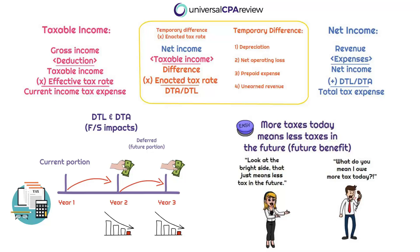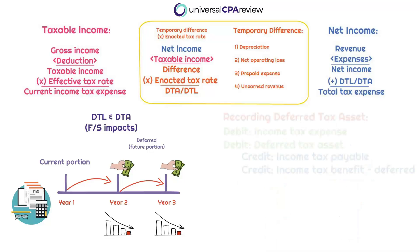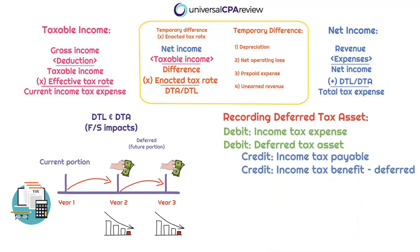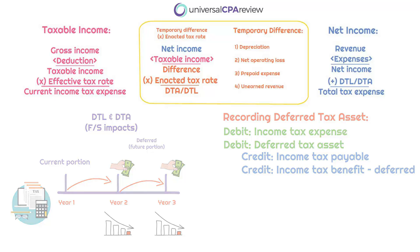And when that benefit is ultimately used, it is then that we will recognize the expense. So we have an income tax expense that is getting recorded for the current portion, which is going to be associated with the income tax payable. And then we also have this deferred tax asset, which is going to be associated with an income tax benefit. This is the deferred portion.